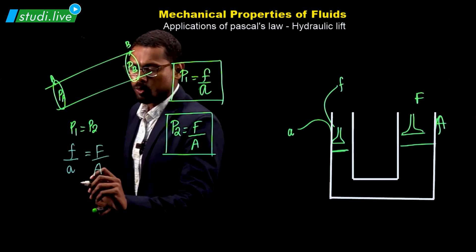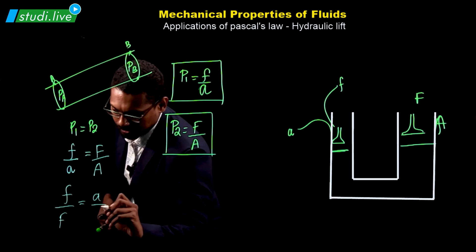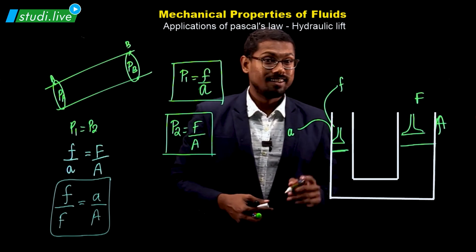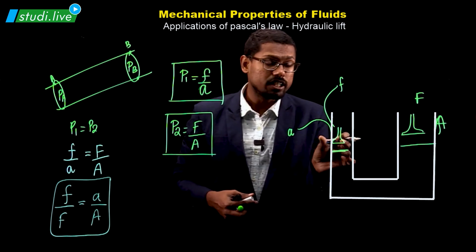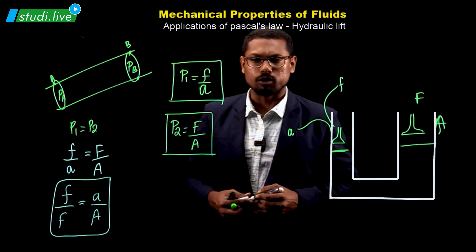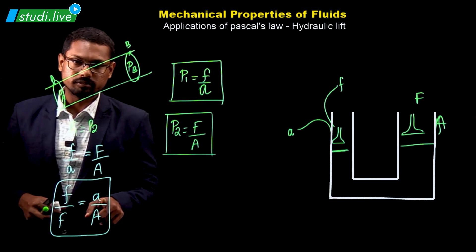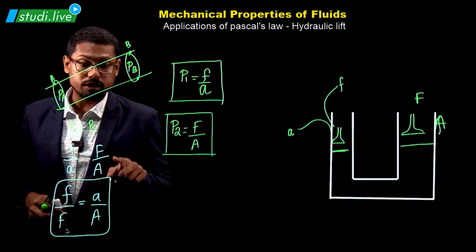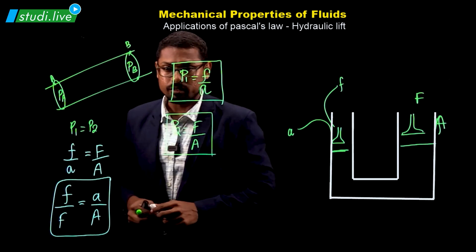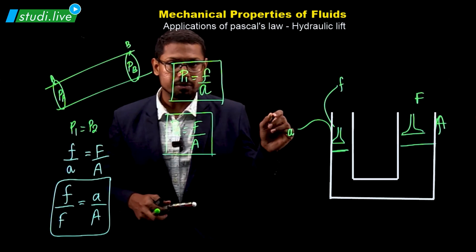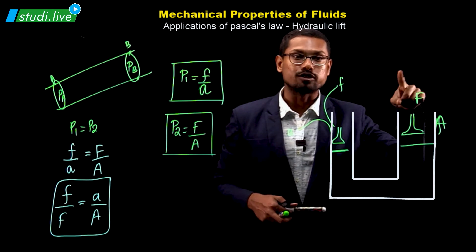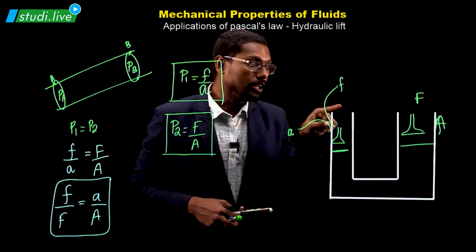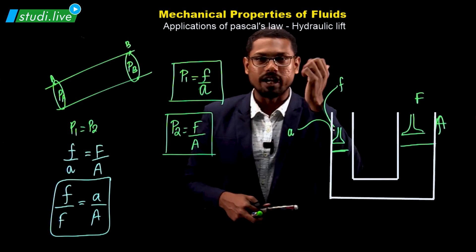Rearranging, F upon f equals A divided by a. The ratio of the forces equals the ratio of the areas. Despite a big difference in the size of the containers — one very tiny, the other very large — the forces balance out. The small area still transmits the same pressure. So even if you apply a very small force on the narrow side, a much larger force is generated on the wide side — enough to lift cars and trucks. This is how a hydraulic lift works.